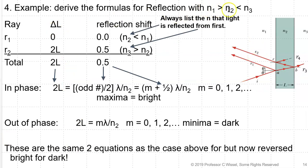For the case N₁ > N₂ < N₃, you break it out and list the index the light reflects off of first. The delta-L for ray R1 is zero. For ray R1, there will be no reflection shift because N₂ < N₁, so it's bouncing off the lower index of refraction — the arrow points left, so this is zero. For the in-phase condition: 2L = (m + ½)λ/N₂ for m = 0, 1, 2. The out-of-phase condition is: 2L = mλ/N₂. You end up with the same two equations over and over, but they can be reversed.